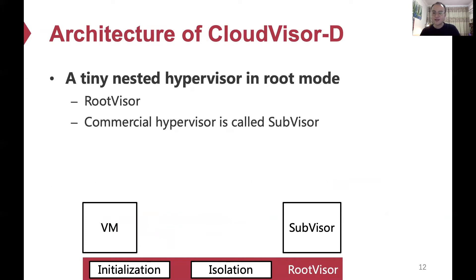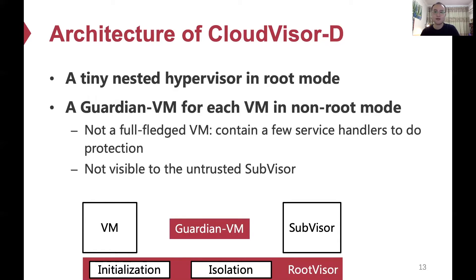CloudVisor-D's architecture consists of two parts. The first part is the tiny nested hypervisor in root mode — we call it the root visor. The root visor works like the traditional CloudVisor. The untrusted commercial hypervisor in our architecture is deprivileged to non-root mode and called the sub-visor. The tiny root visor has full system privilege and manages all important data structures such as EPTs. It provides isolation among virtual machines and the sub-visor in non-root mode. CloudVisor-D also sets up a Guardian VM for each guest virtual machine. The Guardian VM is not a full-fledged virtual machine but only contains a few service handlers and is invisible to the sub-visor.